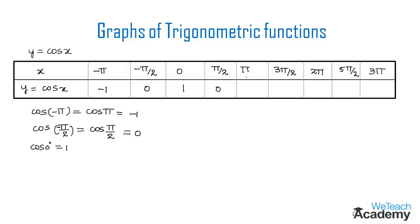For x equal to pi: substituting into y gives cos(pi), which equals minus one. For x equal to 3 pi by 2: cos(3 pi by 2) equals cos(270 degrees) which is 0. Then for x equal to 2 pi: cos(360 degrees) equals 1, so y equals 1.